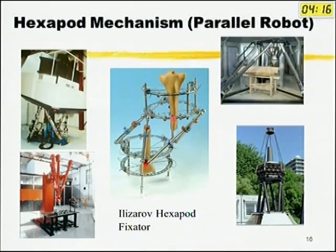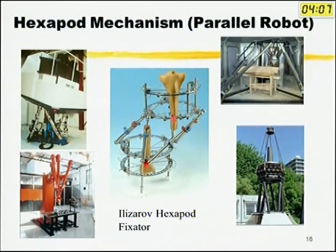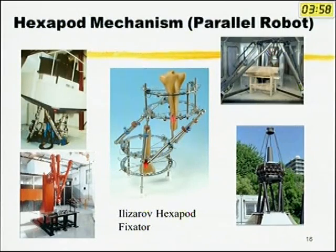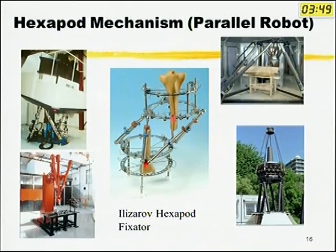A hexapod is used whenever you require precise placement of something in three-dimensional space. It has been around for a long time outside of orthopedics. When pilots train on flight simulators with rolling and front-and-back movements, they are sitting on a platform mounted on a hexapod. When scientists direct a telescope to look at space, they use a hexapod. Many industrial robots today also use hexapods for precise placement.